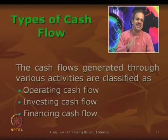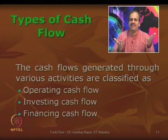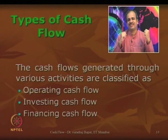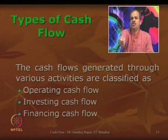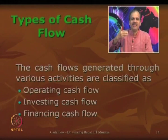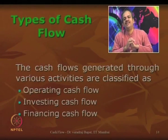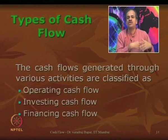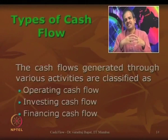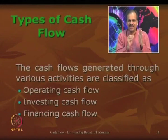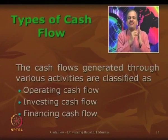Now one or two examples of financing flows. To run the company, I need money. One way is I may issue shares to investors and receive money — that is a financing activity. Or I may approach a bank and take a loan — that is also a financing activity. When I take a loan, I have to repay it too, so repayment of loan is also a financing activity. All activities must be classified into these three categories: operating, investing, and financing. Thank you so much.